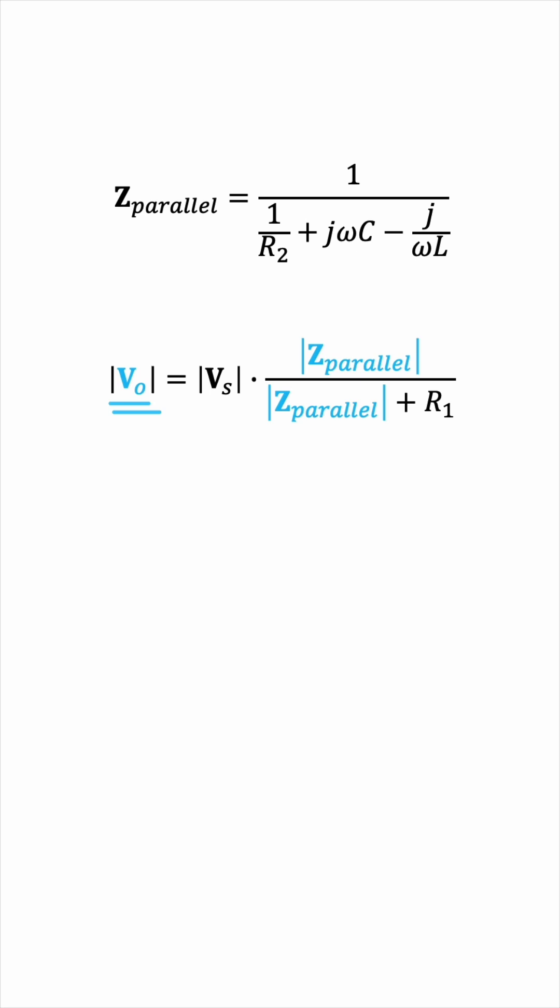So the amplitude of VO is only a function of omega, which shows up in the Z parallel expression. So let's find the magnitude of Z parallel and try and maximize it so that we can maximize the amplitude of VO. Makes sense?